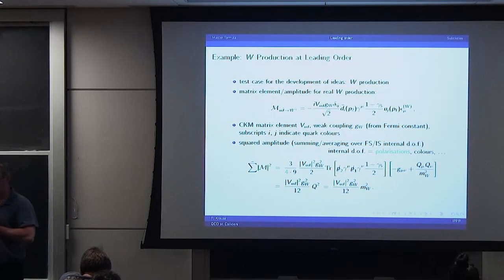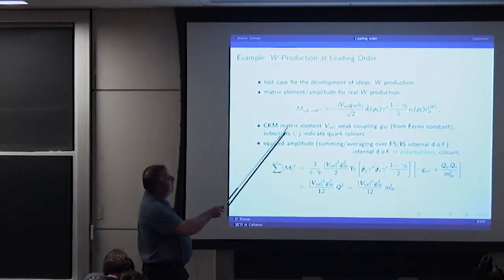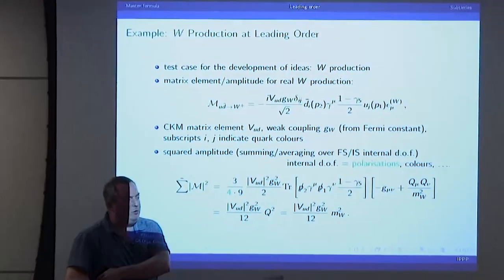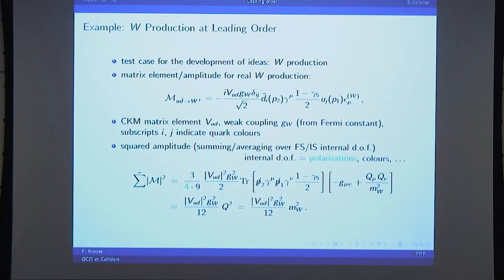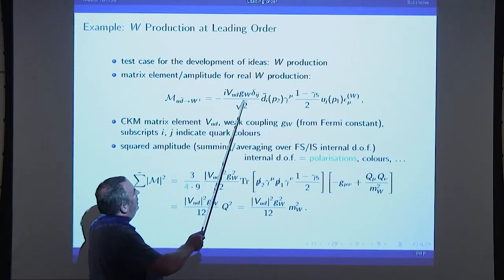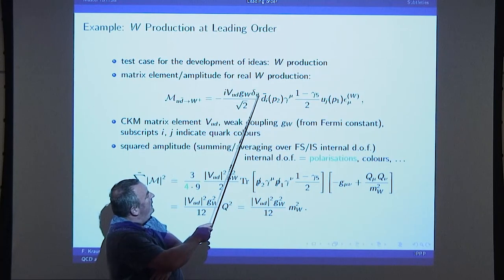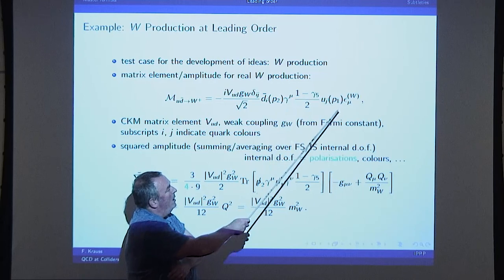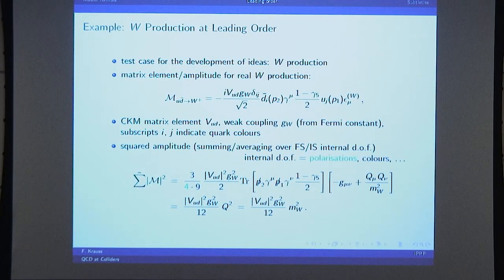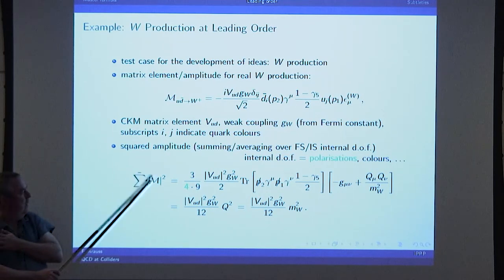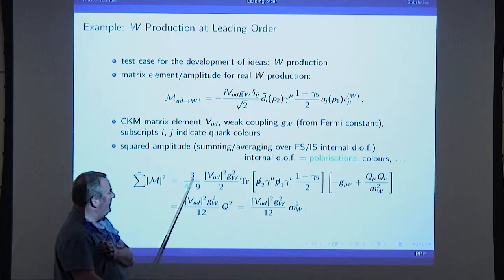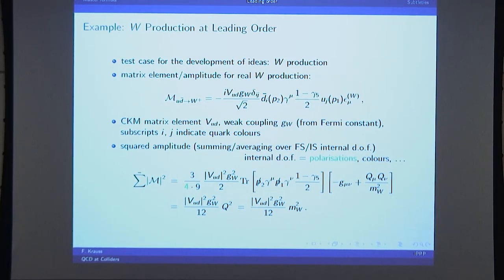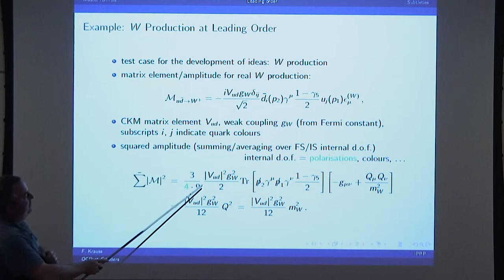The process I picked is W production — I did it because it's pretty much only one Feynman diagram. For W production you have an up and an anti-down quark. If you do lepton pairs you have interference between Z and photon, which is already annoying — this is only one diagram. You get your matrix element: CKM element, coupling constant, delta in the colors, spinors for the quarks, left-handed coupling, polarization vector. You square the thing, do all possible averages. You get a factor of three because you have three colors — your quarks have two spins and three colors each, and you have two to average. That's why you have a four-ninths factor.